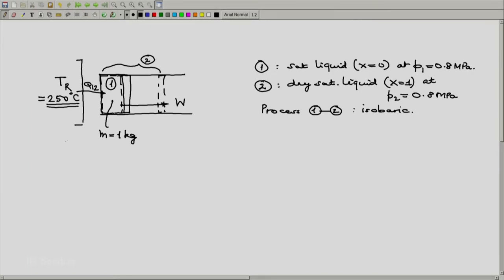If we sketch this diagram on the TS plane, it will start becoming comfortable with the TS plane now. Suppose this is the saturated liquid line and this is the dry saturated vapor line. Then our process, suppose this is the isobar 0.8 mega Pascal, the isobar is likely to go something like this. But our state 1 is dry saturated liquid. State 2 is dry saturated vapor. The process can be shown like this.